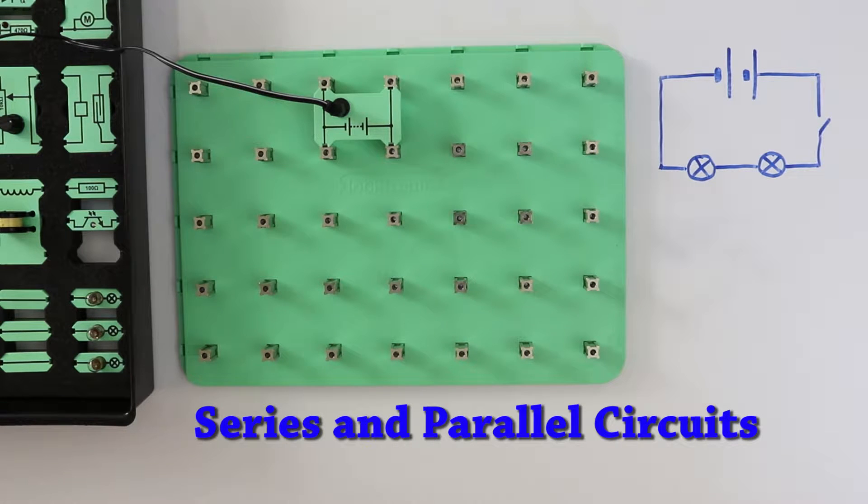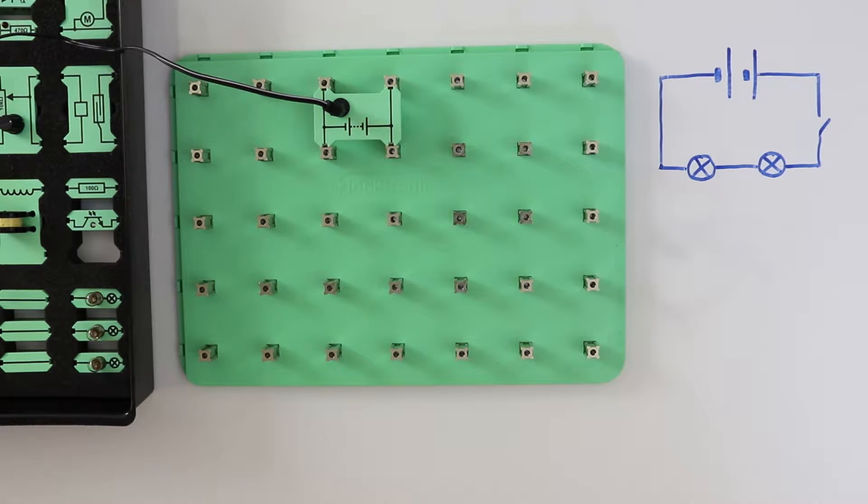In some electrical circuits there is only one possible route for all the electricity to flow around. These are called series circuits.